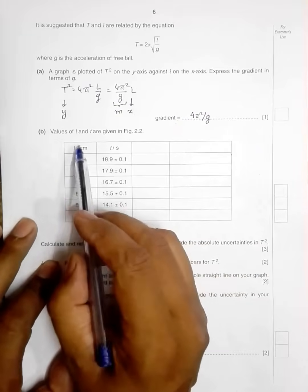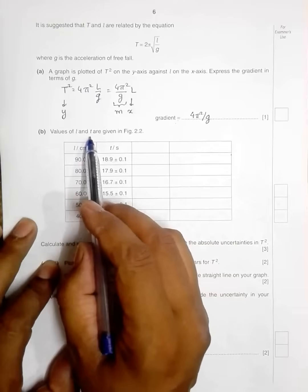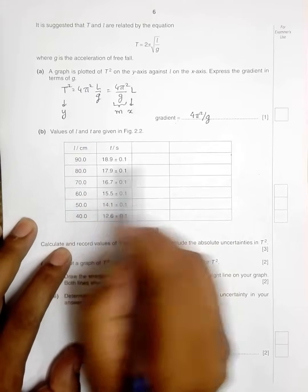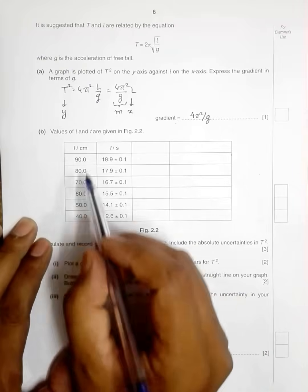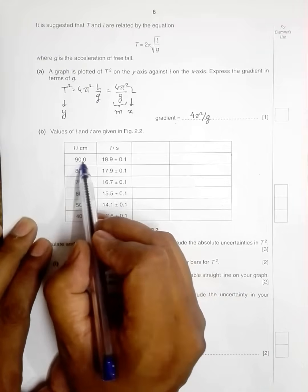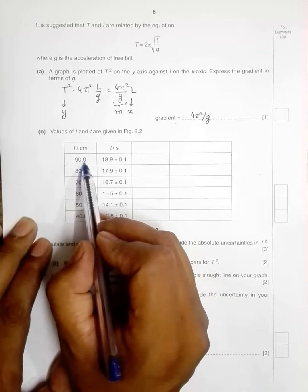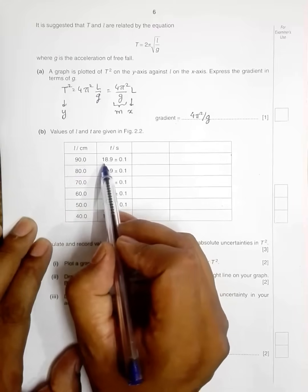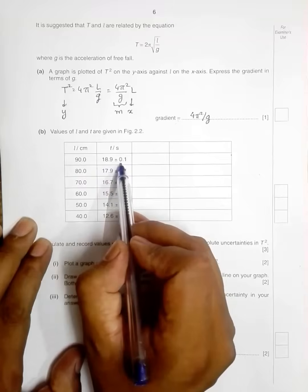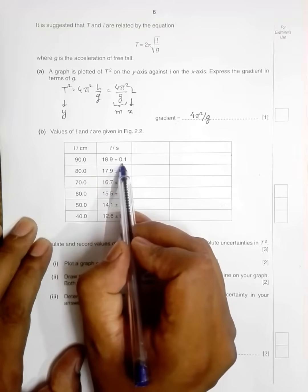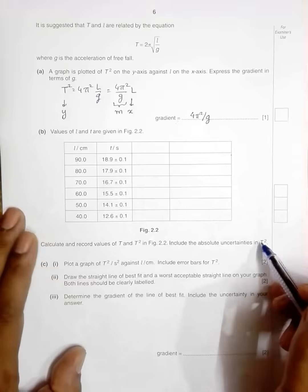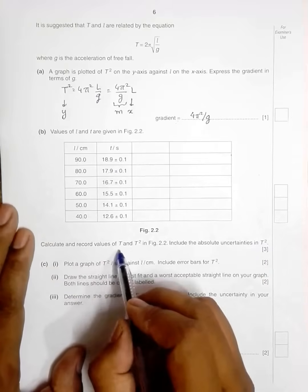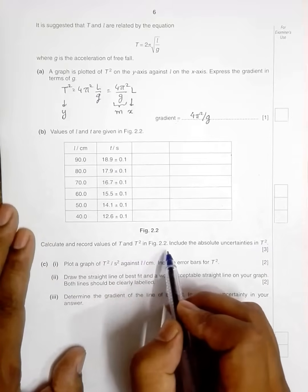Now we are given several values of small L and T, where T is the period for 10 oscillations. As you can see here 90.0, that means the device can measure up to 0.1 cm, and here we have 18.9 ± 0.1, so this is the sensitivity or least count of the worst that is being used.